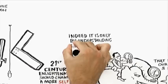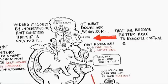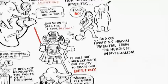Indeed, it's actually by understanding that conscious thought is only a part of what drives our behavior that we become better able to exercise self-control. All of this can enable us to distinguish our needs from our appetites and our amazing human potential from the hubris of individualism. It's the basis for self-aware autonomy.